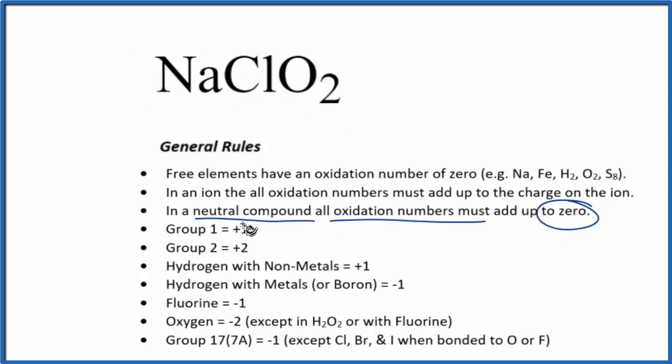Sodium is in group one on the periodic table, which has a plus one oxidation number. Chlorine, we're not sure because the rule says it's minus one, except when bonded to oxygen. So it's bonded to these oxygens, so we can't use this rule.